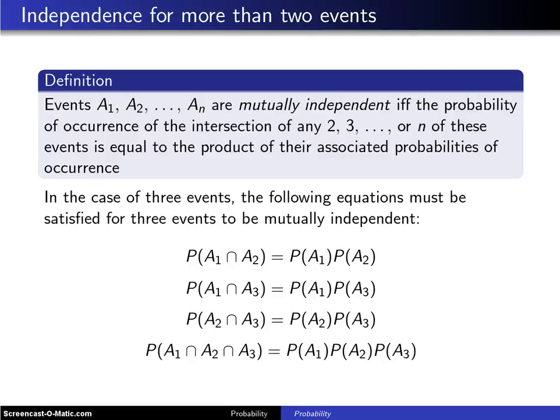The previous example showed that you can have three events that are pairwise independent, but the probability of the three-way intersection between the events is not equal to the probability of each of the three individually.